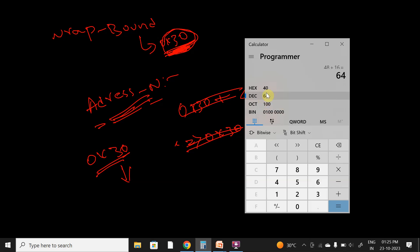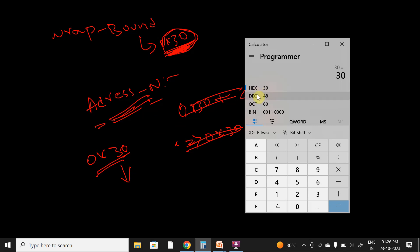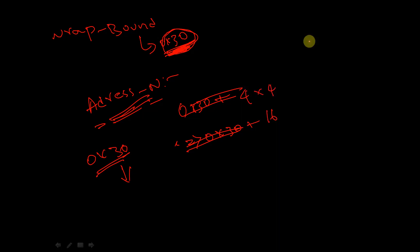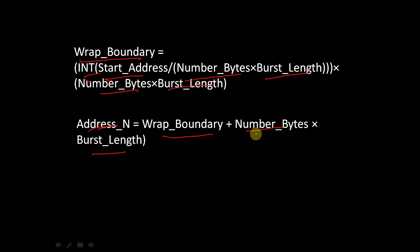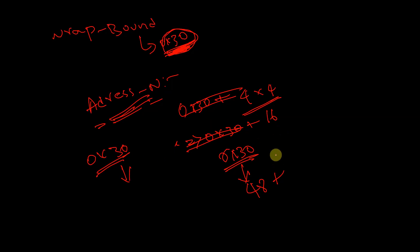48 plus 16 gives 64 in decimal, and if we convert that to hexadecimal we get 0x40. So: converting 0x30 to decimal gives 48, add it with 4 times 4 — that is number_of_bytes times burst_length — which is 16. We get decimal 64, and converting it to hexadecimal we get 0x40. So address_n is equal to hexadecimal 40.